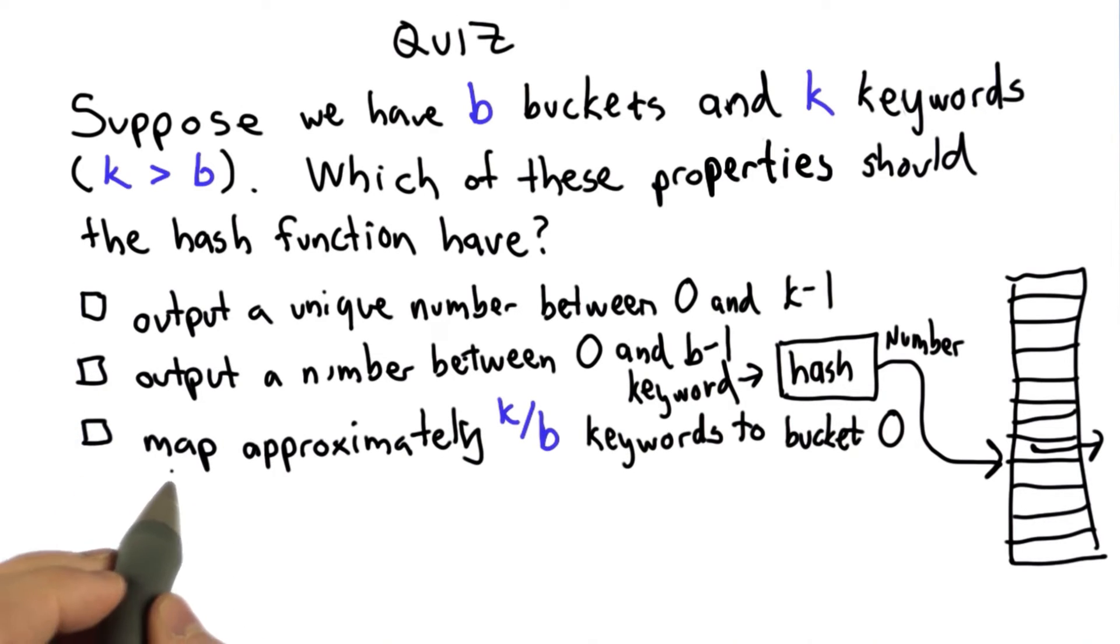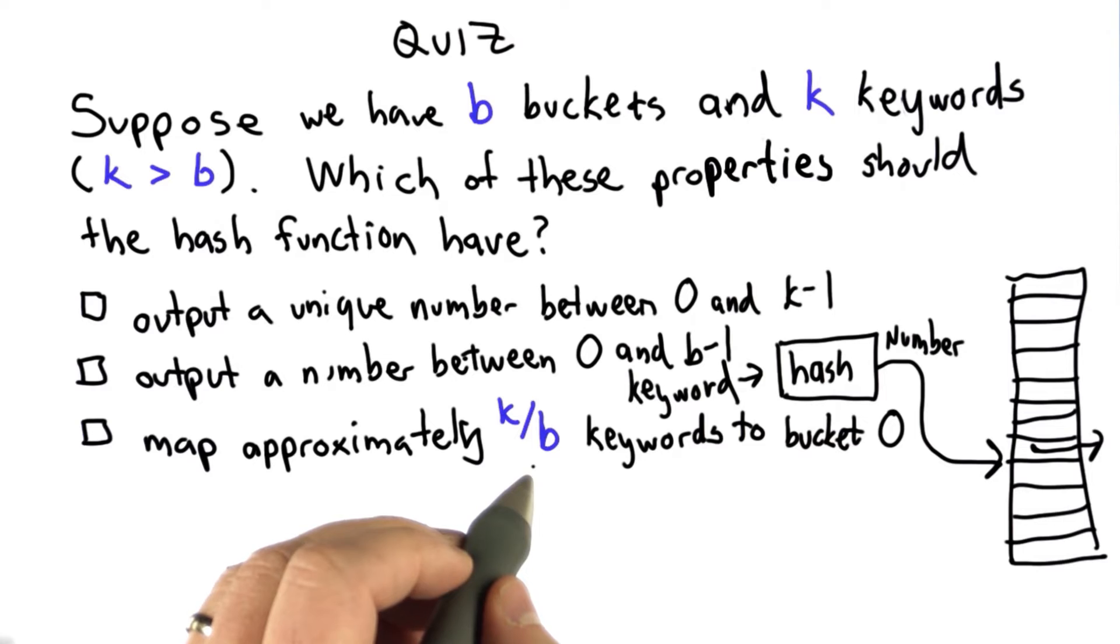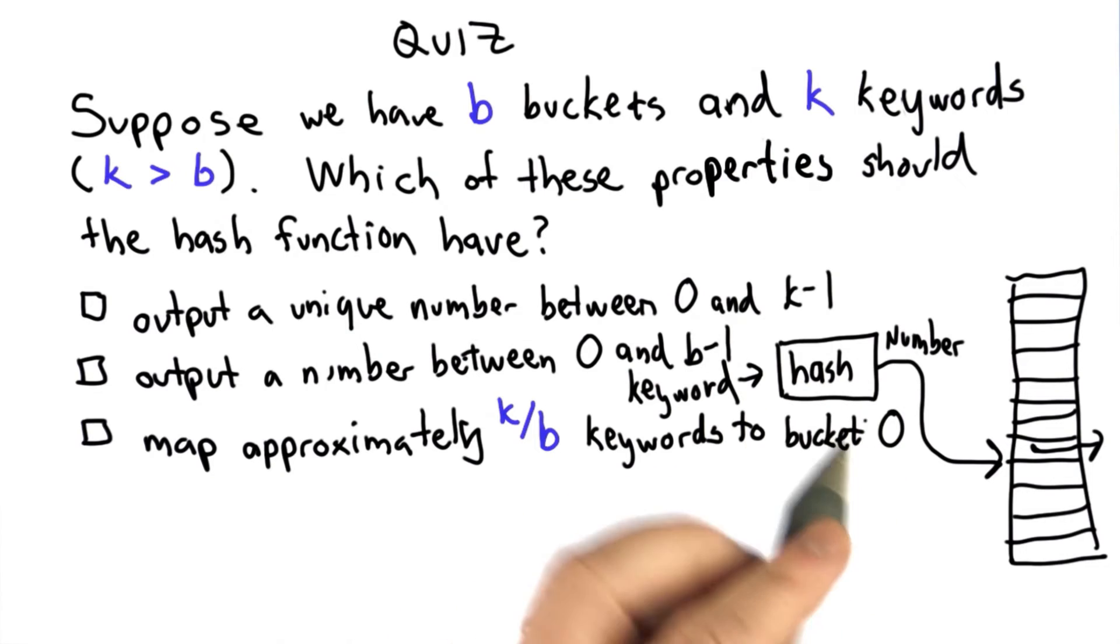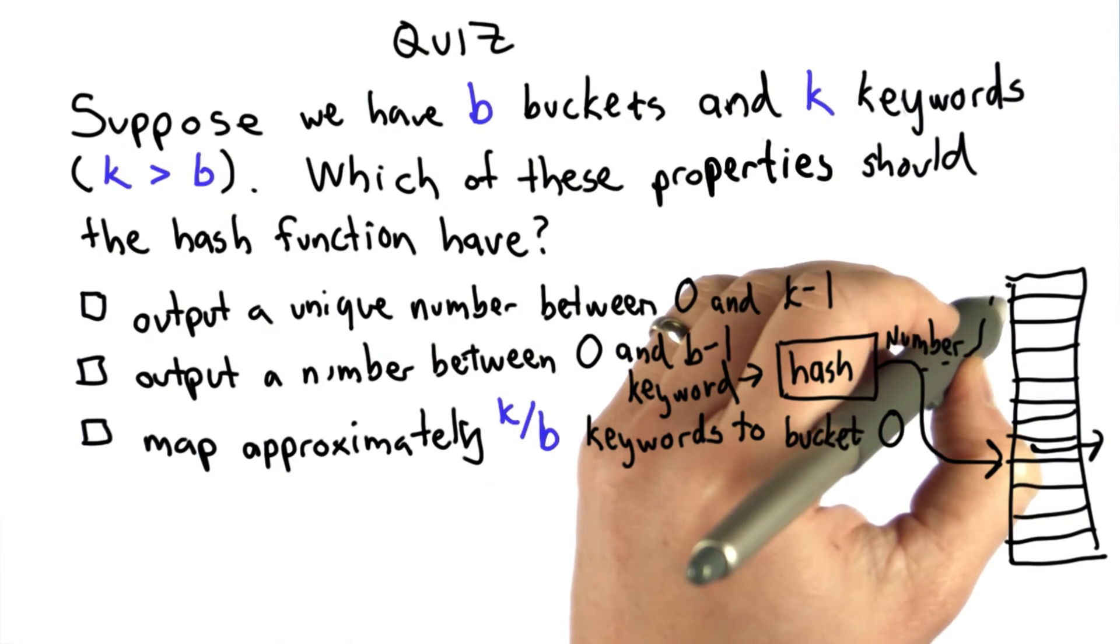The third choice is it should map approximately k divided by b of the keywords to bucket 0. That means for that number of keywords, the output of the hash should be 0, and it should map to the first bucket.